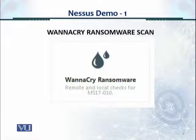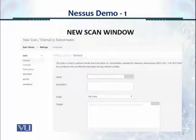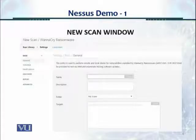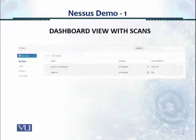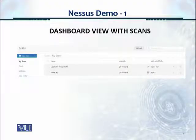I ran the WannaCry ransomware scan on my own system and it passed — meaning I had the vulnerability patched. When you click on New Scan it opens a window asking for the name of the scan, a description, and a target. The target means the range of IP addresses you enter under New Scan. After that, you see the dashboard view showing the scans you have created.